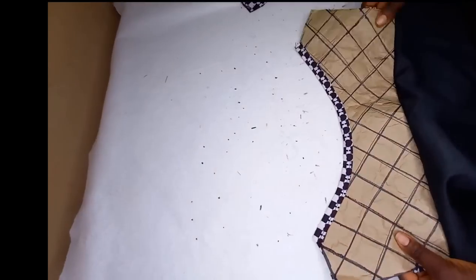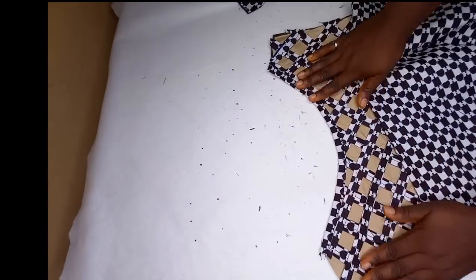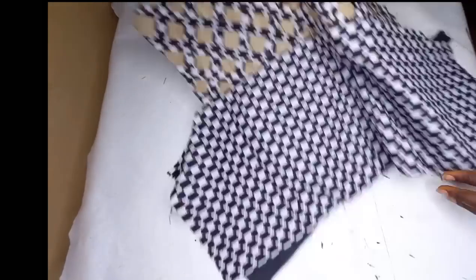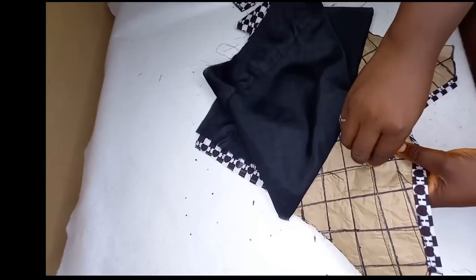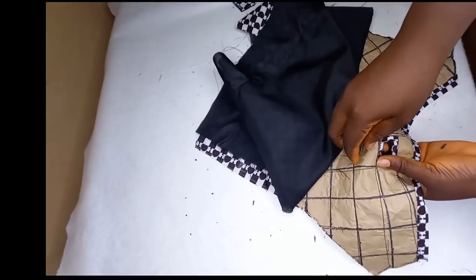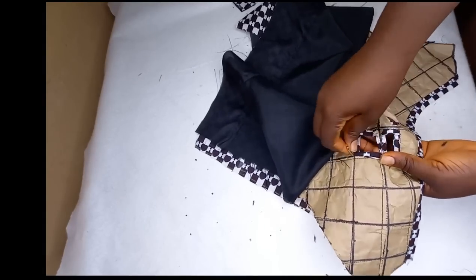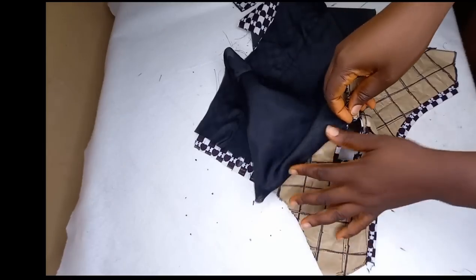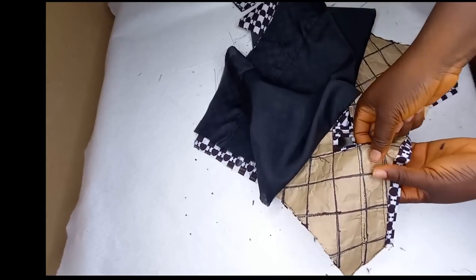So guys after sewing this is what we came out with, this is the result. Remember to pipe your neckline. So this is the look of it. The next thing I'll be doing is to peel off the pattern paper from our basket design so that it will come alive, it will have a beautiful appearance.